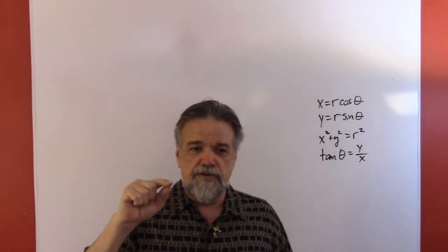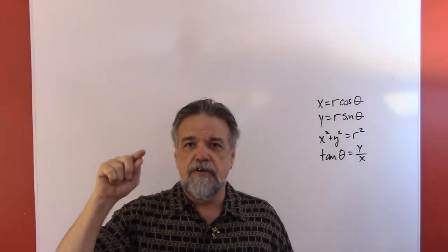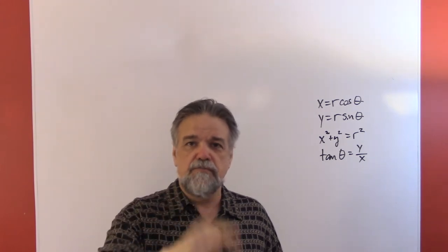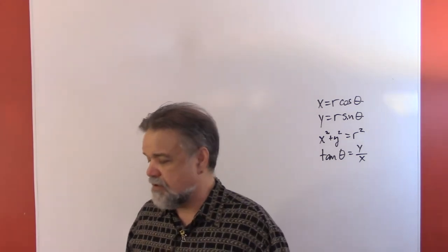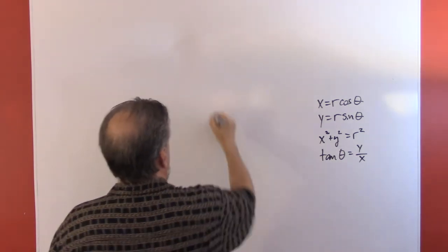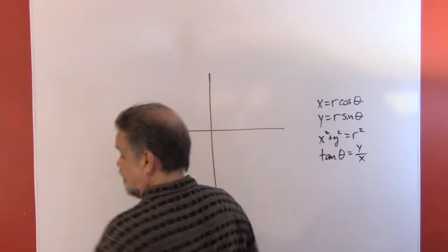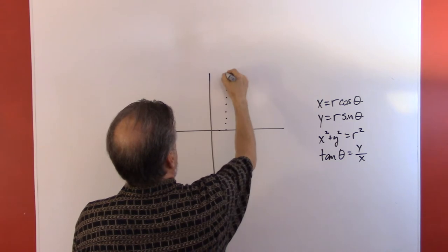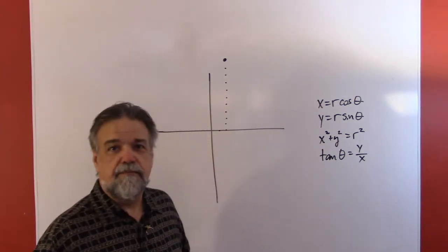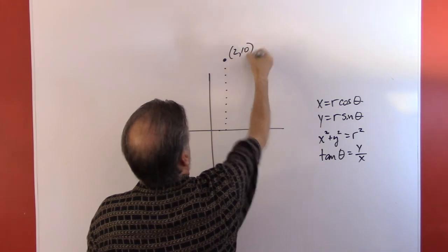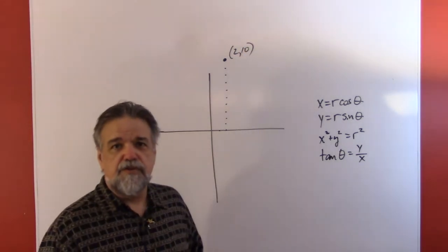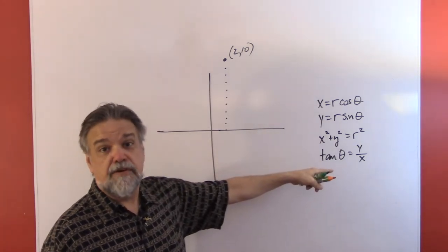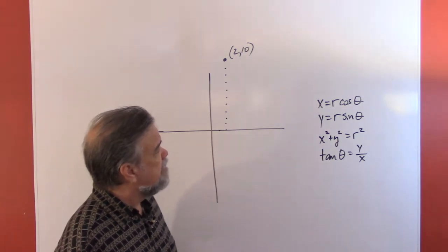Hey math students! Today we're going to take a point written in Cartesian coordinates and change it to polar coordinates. Let's start with the point (2, 10) and put that into polar coordinates. The other day we reminded ourselves of these relationships.